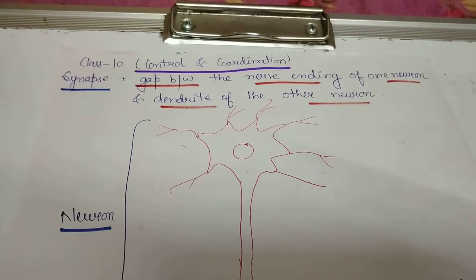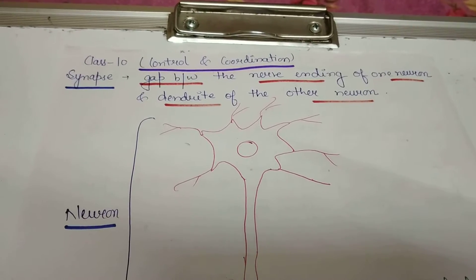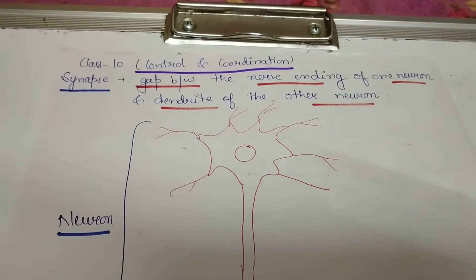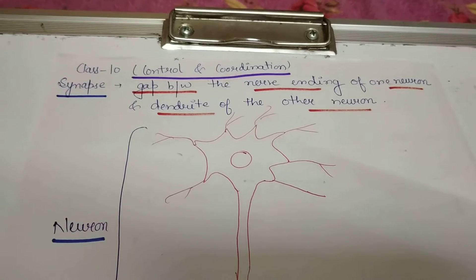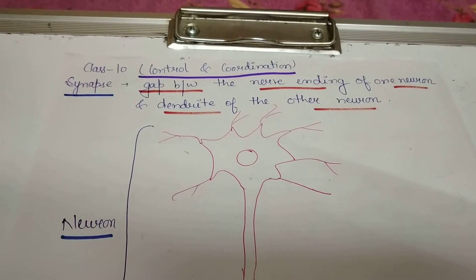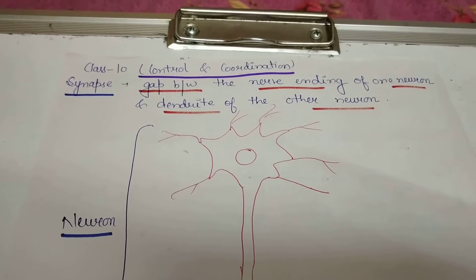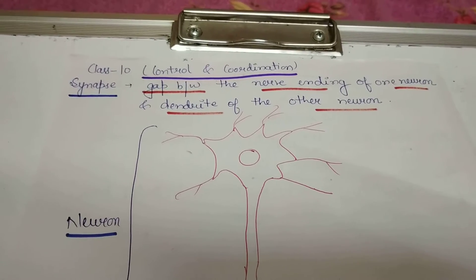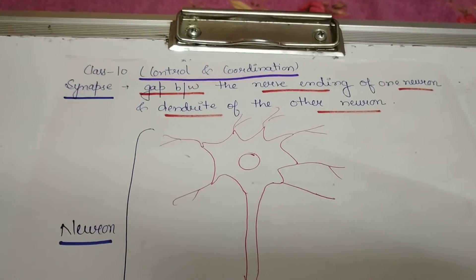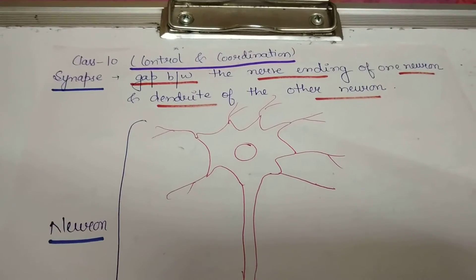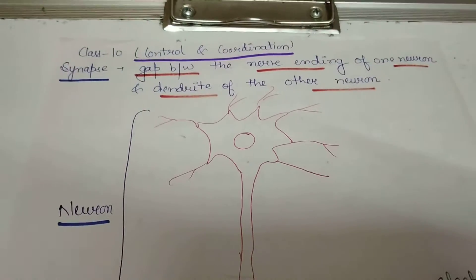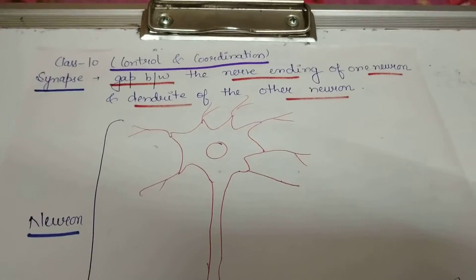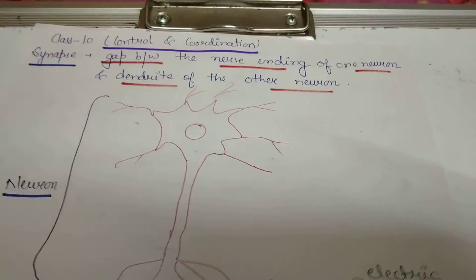Good morning students. Welcome to show by classes. Today our topic is from Class 10, chapter Control and Coordination. First term is synapse. This is a gap between the nerve ending of one neuron and the dendrites of another neuron.